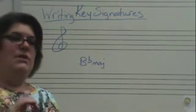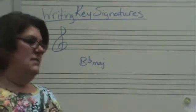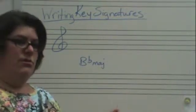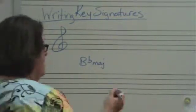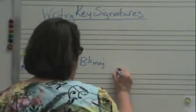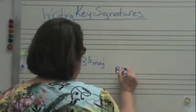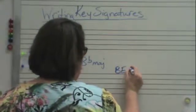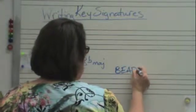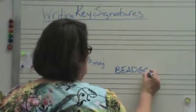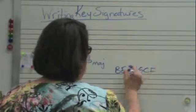Firstly, put the order of flats near you for reference. The order of flats spells BEAD-Greatest Common Factor — that's B, E, A, D, G, C, F.